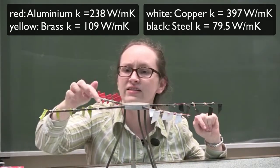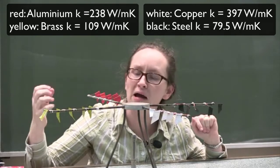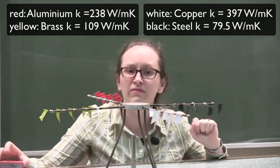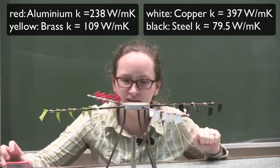The flags are connected by little globs of wax. When that wax is melted due to the heat, the flags will drop off. So let's light the Bunsen burner now.